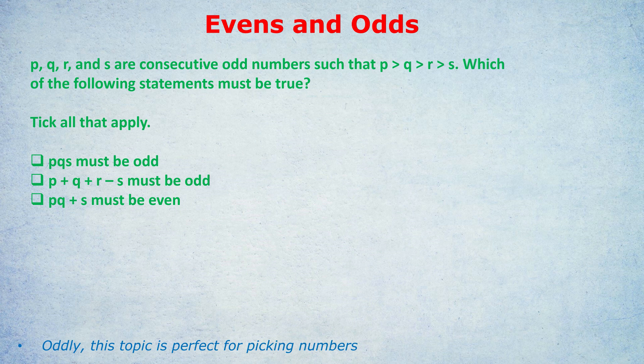If you see an even and odd question, the chances are greater than 50-50 that you can just solve it by picking numbers. So that's what I'm going to do here. They said they were consecutive odd numbers with P being the biggest, so I picked 7, 5, 3, and 1. P is 7, Q is 5, R is 3, and S is 1 — but you could have picked different numbers and still get the right answer.